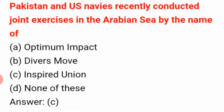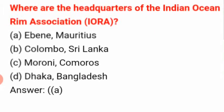Pakistan and US Navy recently conducted a joint exercise in the Arabian Sea by the name of 'Inspired Union'. Where are the headquarters of the Indian Ocean Rim Association (IORA)? The answer is A: Ebène, Mauritius.